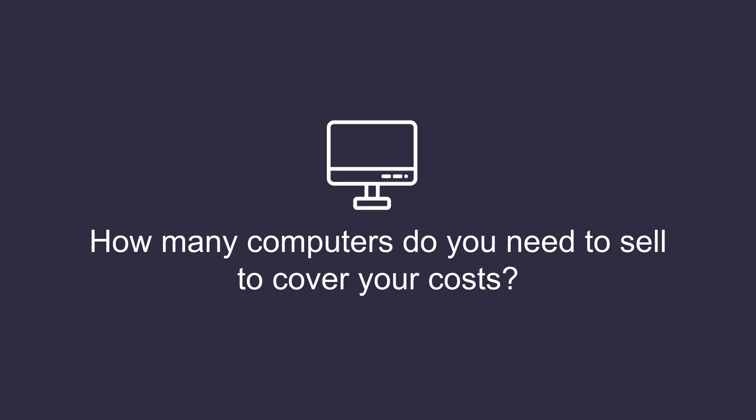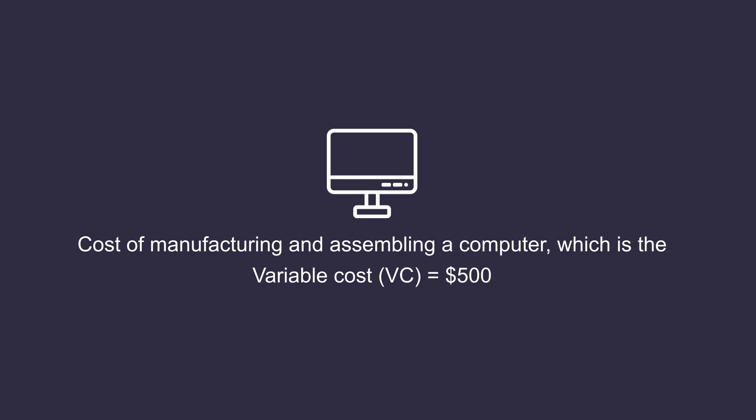Let's look at a simple example. Say you are in the business of selling computers. How many computers do you need to sell to cover your cost? The cost of manufacturing and assembling a computer is a variable cost. For a single computer, it is $500.